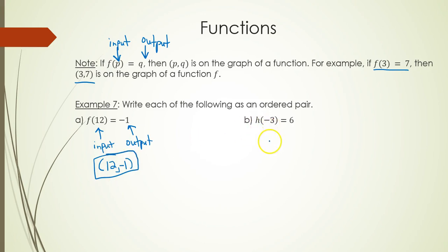Part B: h(-3) = 6. The ordered pair would be, well, input is -3, output is 6. So not much work to show there at all, but it's an important concept that what's in the parentheses is input and then the number on the other side of the equal sign is output.